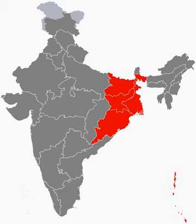Nalanda, Puspagiri and Vikramshila universities were the famed institutions of higher learning in ancient India located in eastern India. One of the first great universities in recorded history was the ancient Nalanda University located in Bihar, and another institute of higher learning was the ancient Puspagiri University recently discovered in Odisha. Education in the eastern part of India has seen rapid transformation, and East India is now home to some of the great Indian universities and institutions of national importance.